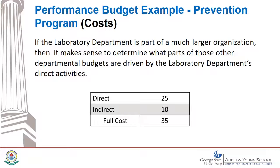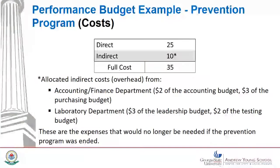If the laboratory department is part of a much larger organization, then it makes sense to determine which parts of other departmental budgets are driven by the laboratory department's direct activities. While the direct cost is 25, there are 10 in indirect or allocated costs. These overhead elements will be found in other budgets — such as the accounting and finance department spending $2 of the accounting budget and $3 of the purchasing budget going towards processing payroll and purchases made by the laboratory prevention program. Within the laboratory department, $3 of the leadership budget and $2 of the testing budget represent expenses that would no longer be needed if the prevention program was ended.